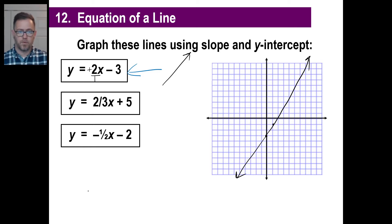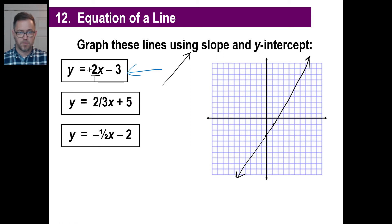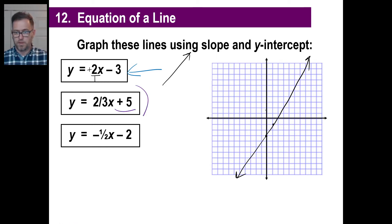Pause it and try the second one. The second one is this: immediately you go, y-intercept is one, two, three, four, five — put a point right there. My slope is two-thirds, and that is positive, so it goes like this.